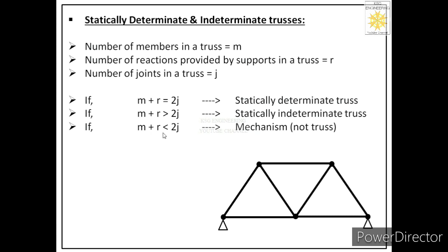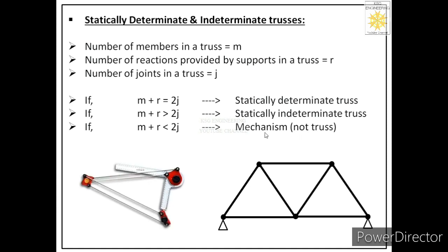If m + r is less than 2j, then that is no longer a truss — it is a mechanism. A good example of a mechanism is a drafter used for drawing. The scale can move with the help of links connected to each other, so it cannot take load because there is motion between the members. If m + r < 2j, motion will happen between members and it cannot be a truss; it will be called a mechanism.